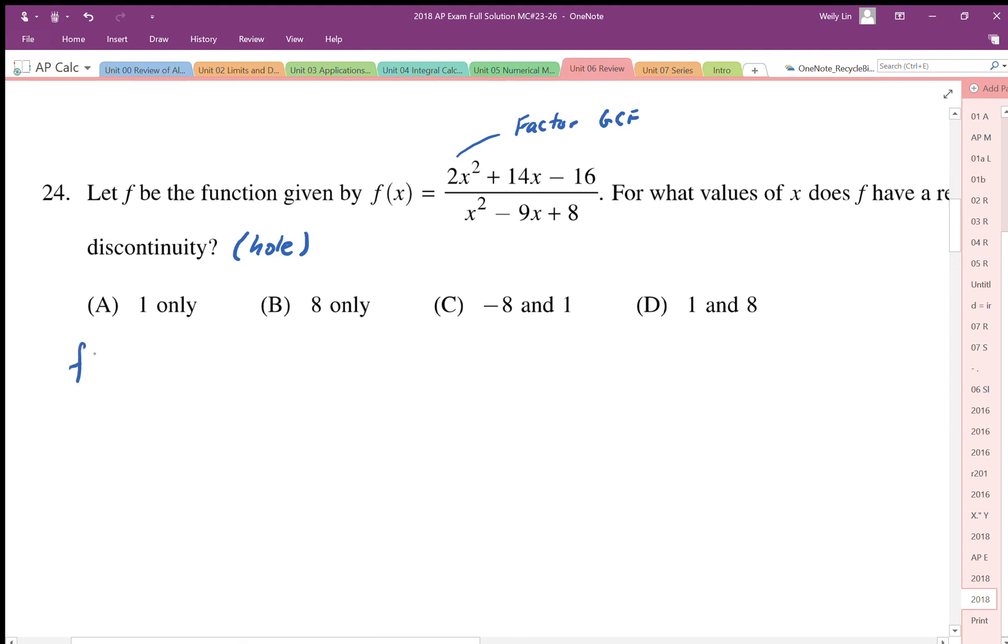So factoring this, we're going to end up with 2 bracket, x squared plus 7x minus 8. And in the denominator, we end up with x minus 8, x minus 1.